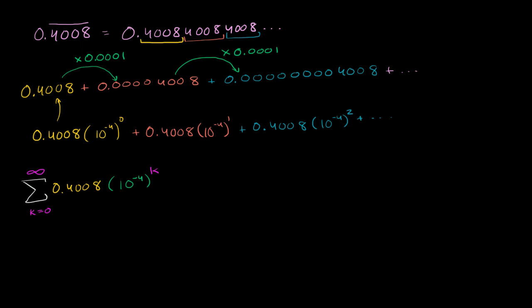So I'm assuming you've had a go at it. We've already seen, we've already derived in previous videos that the sum of an infinite geometric series, k equals 0 to infinity of a r to the k power, that this sum is going to be equal to a over 1 minus r.